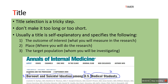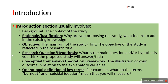For example, in an article published in Annals of Internal Medicine, the title is 'Burnout and Suicidal Ideation among U.S. Medical Students.' Here, burnout and suicidal ideation is the outcome of interest, U.S. is the place, and medical students is the target population. Bearing these three components in mind makes title selection easier.